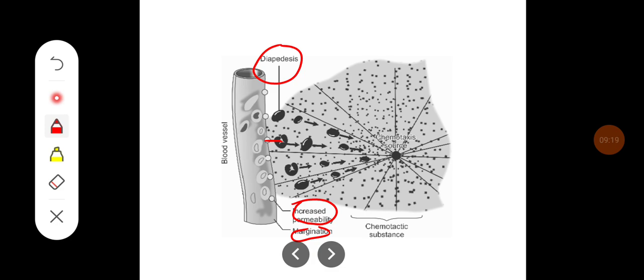Then some chemoattractant substances produced by the bacteria are going to cause the attraction of the neutrophils. The process is called chemotaxis. So then these neutrophils are going to phagocytose the bacteria with the help of opsonization.